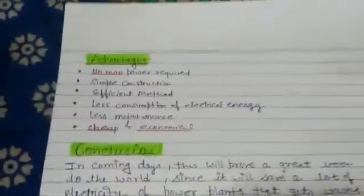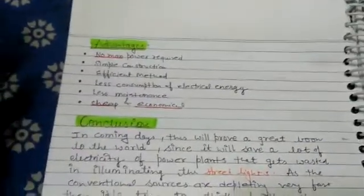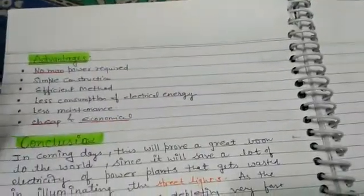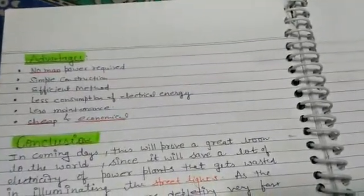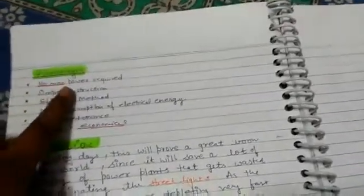Advantages: The main advantage is that we do not have to work manually. In past scenarios we had trouble with the switching. Automatic street light is very helpful because there is no need of manual operation, no manpower required. Automatic street light is very simple to construct.